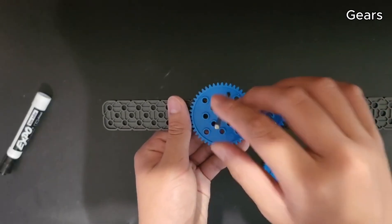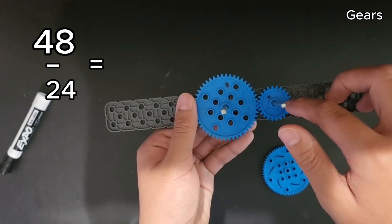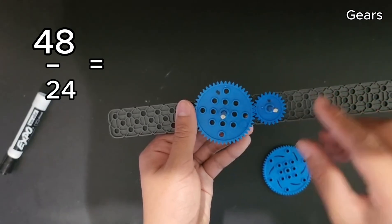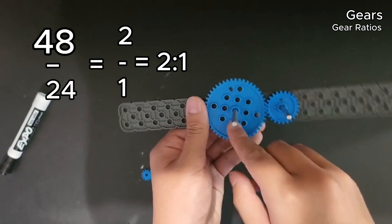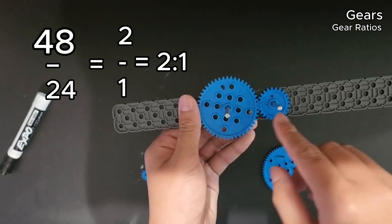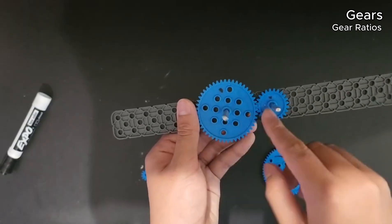So there are two gears right here. There's a 48 tooth gear and a 24 tooth gear. So what this means is that this is a 2 to 1 gear ratio. What do I mean by that? This gear has two times the amount of teeth as this. 48 to 24 is 2 to 1.